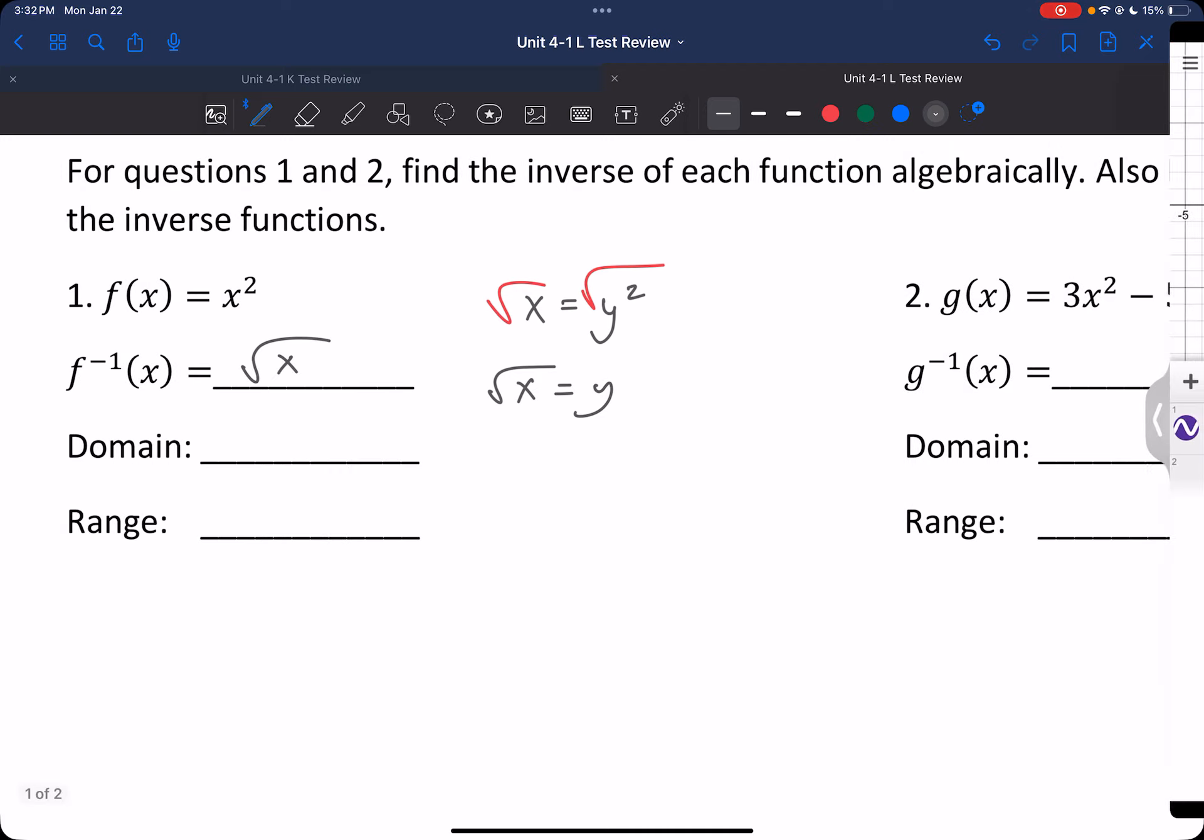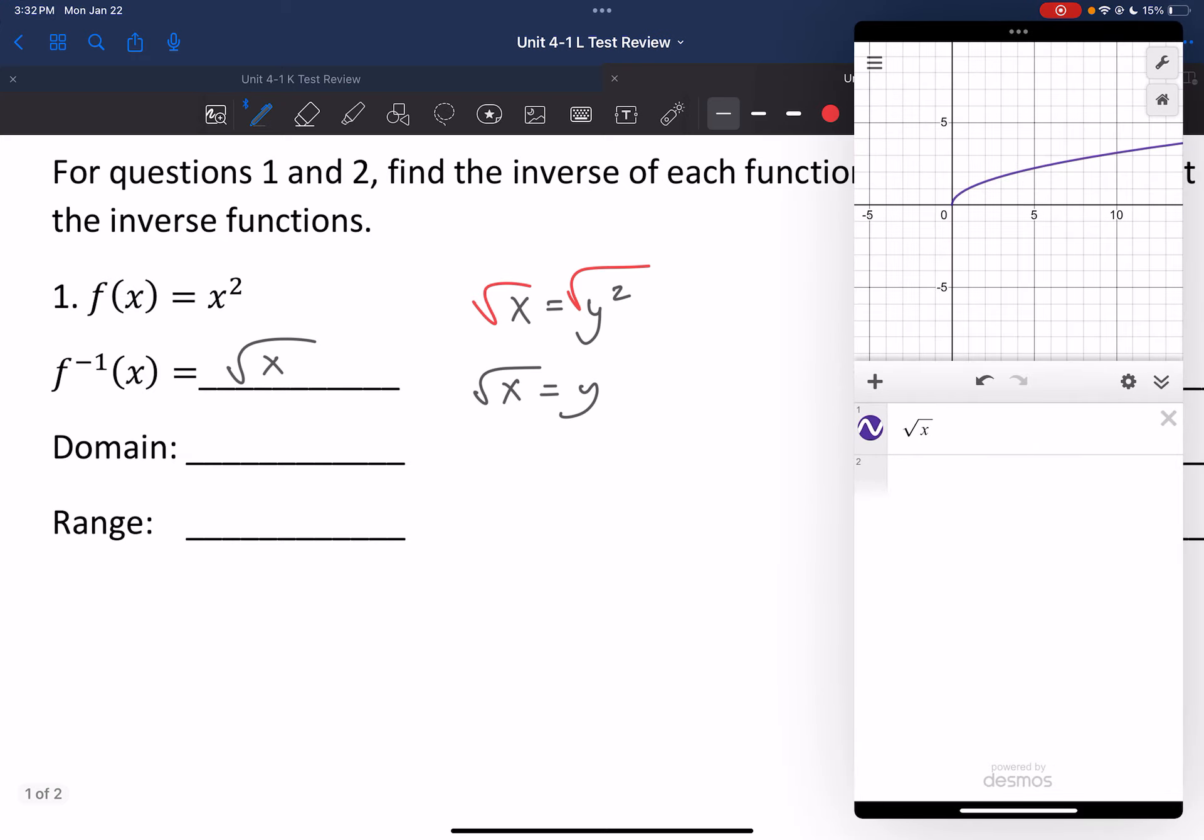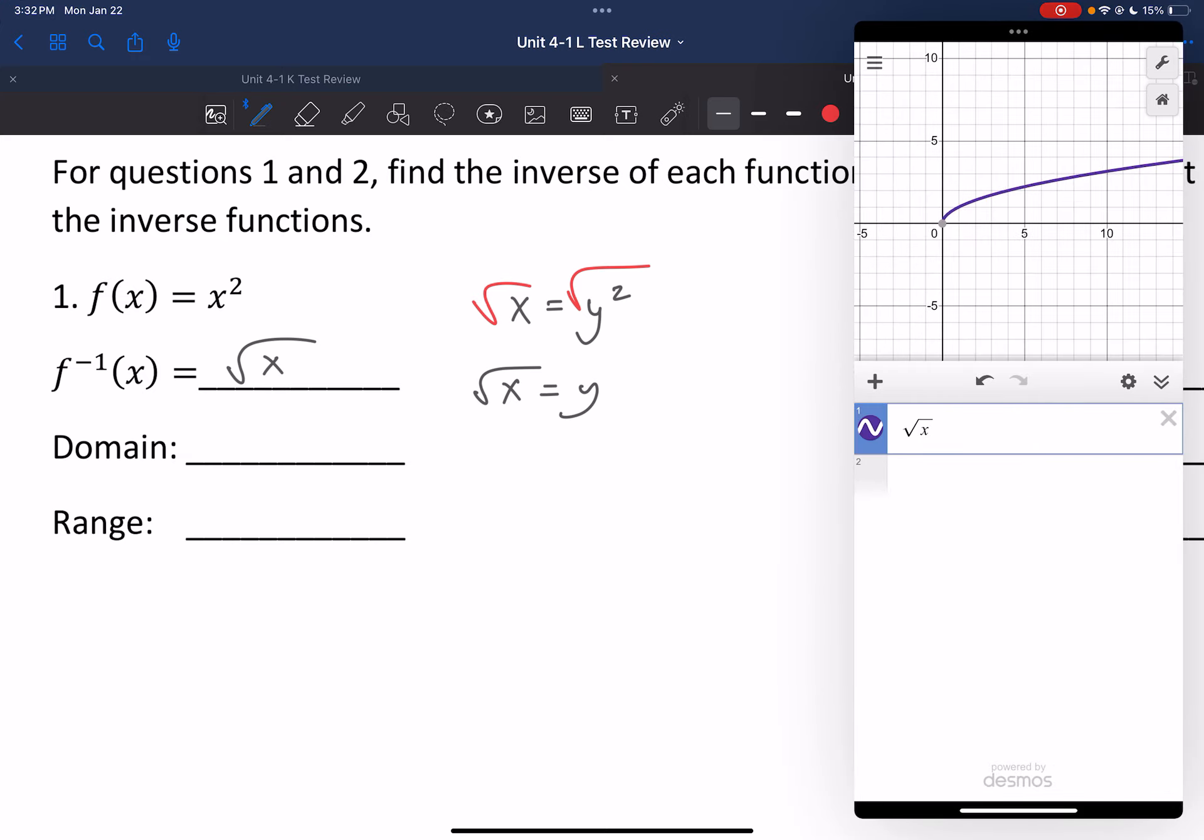So let's talk about what's the domain range of square root of x. Well, it starts at 0, 0. So our domain starts at 0, our range starts at 0. And we're going to the right, so our domain is going to positive infinity. Our range is going up, so we're going to positive infinity. There's our domain range.